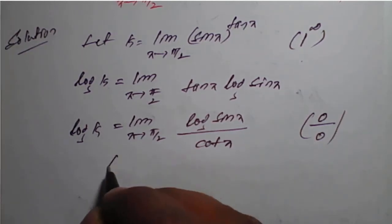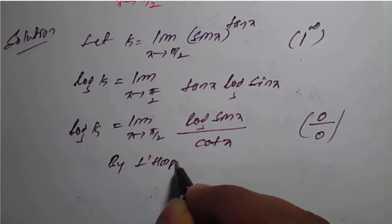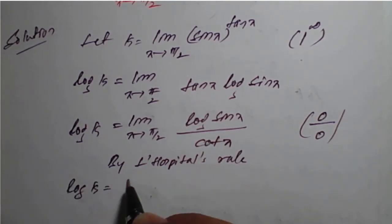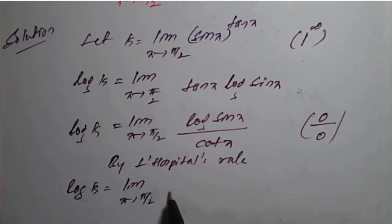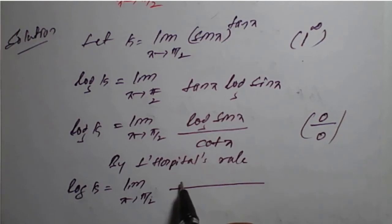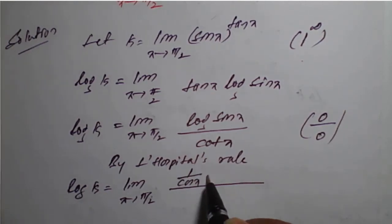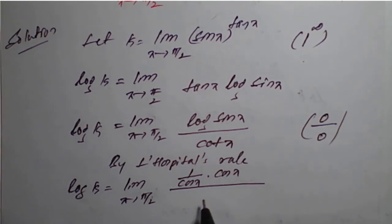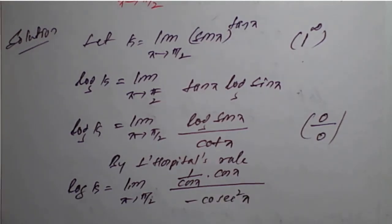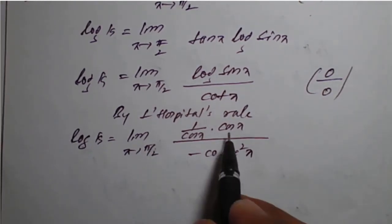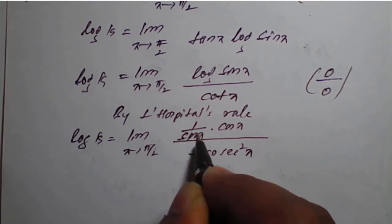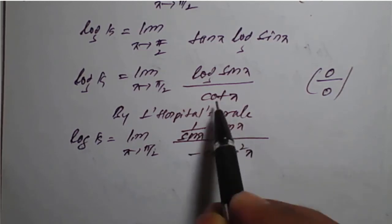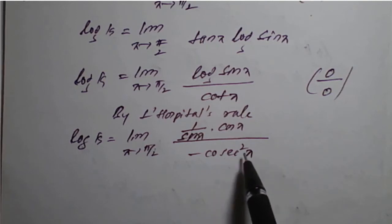We can apply L'Hôpital's rule. By L'Hôpital's rule, log(k) equals the limit as x tends to π/2 of the derivative of log(sin(x)) divided by the derivative of cot(x). The derivative of log(sin(x)) is (1/sin(x)) times cos(x), and the derivative of cot(x) is minus cosec squared of x. This is an important example — concentrate here.